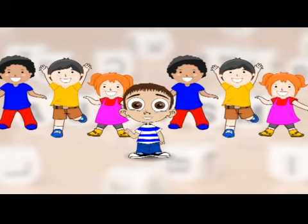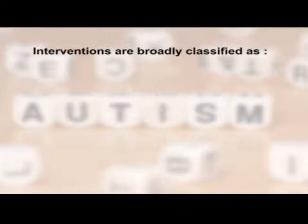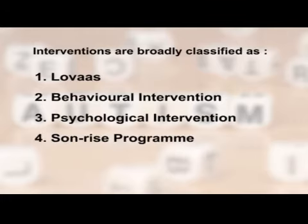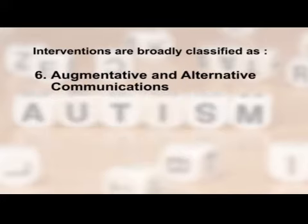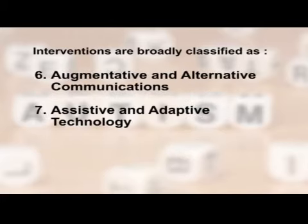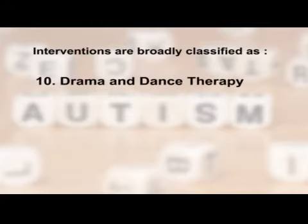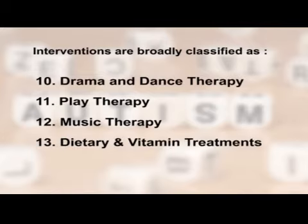An intervention is any kind of activity designed to improve the quality of life for people on the autism spectrum disorder. Some interventions can be quite simple — for example, if a child finds difficulty being in a noisy environment, you can reduce the noise in the room. Interventions can be broadly classified as: Lovaas, behavioral intervention, psychological intervention, Son-Rise program, motor intervention, augmentative and alternative communication, assistive and adaptive technology, Makaton, art therapy, drama and dance therapy, play therapy, music therapy, and dietary and vitamin treatments.